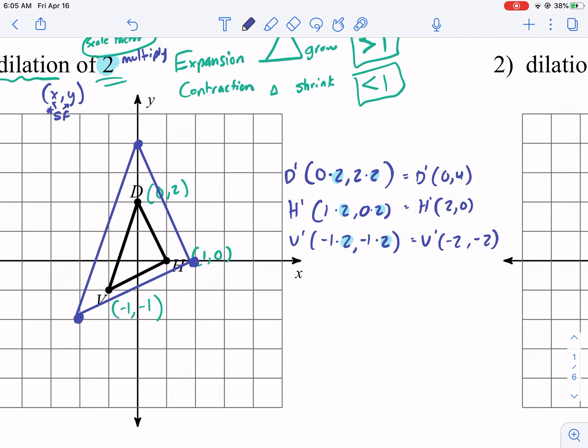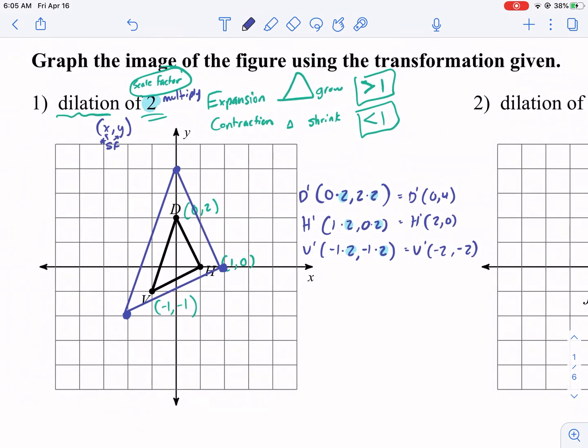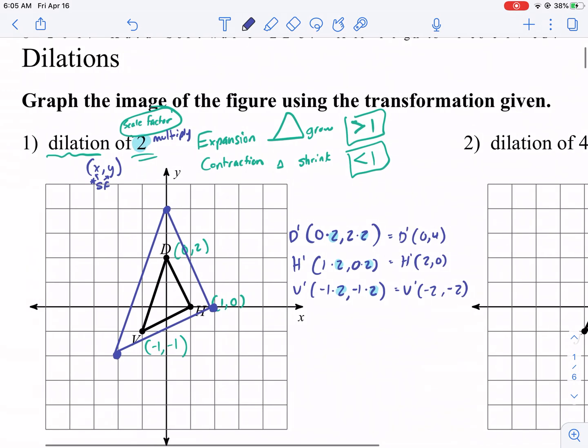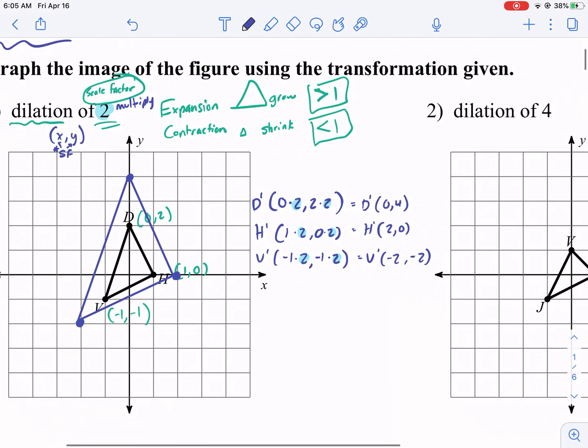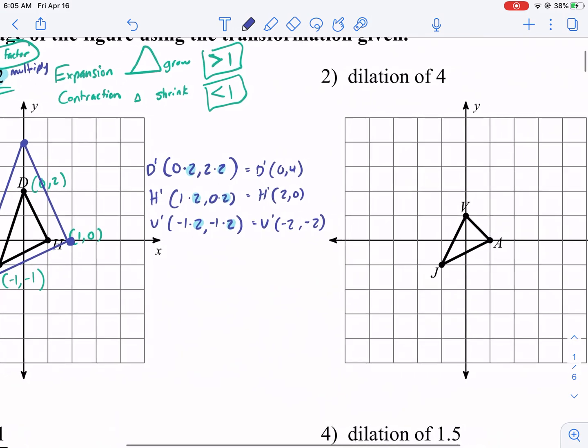And we see that it has expanded. Now, it's a non-rigid motion. That means it doesn't maintain its shape. That's what dilations are. They're non-rigid, meaning it doesn't keep the same dimensions. But it is a type of transformation.